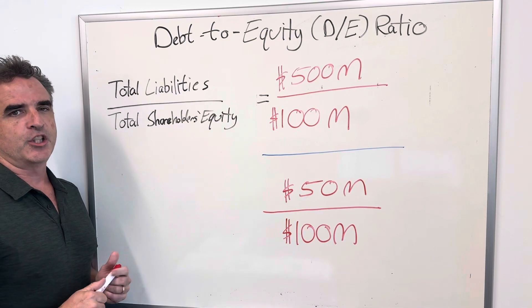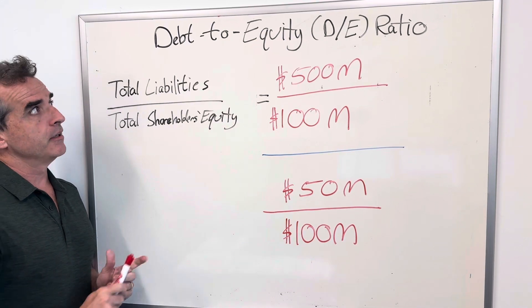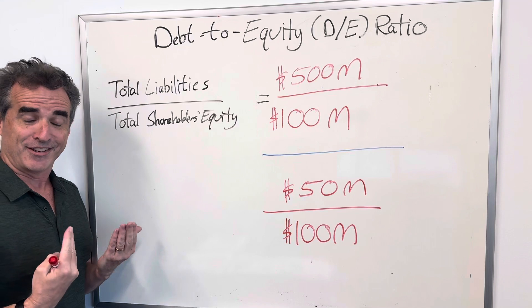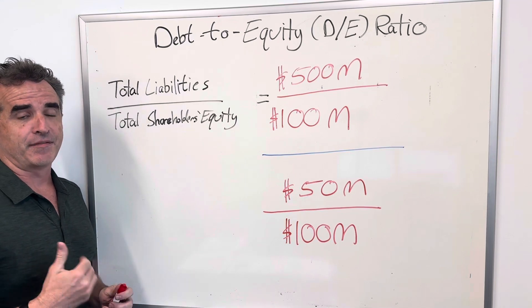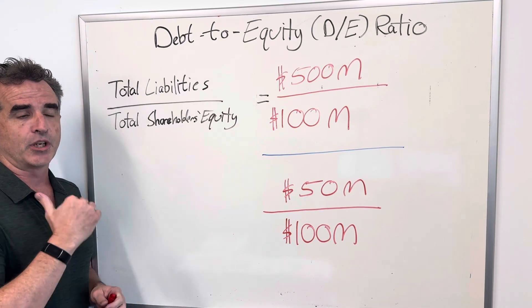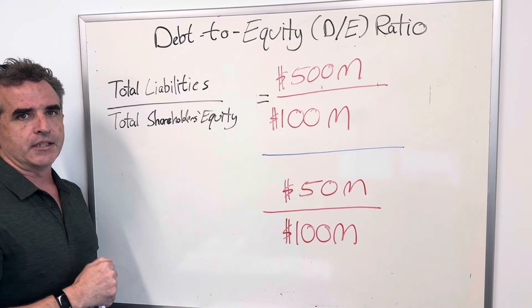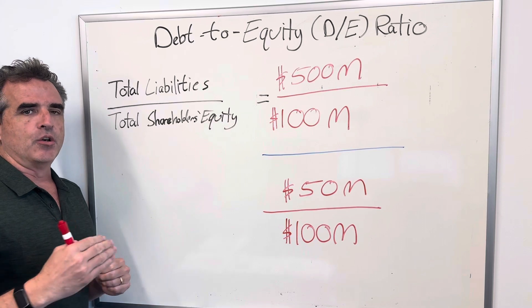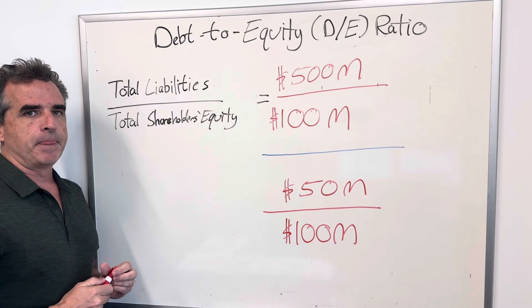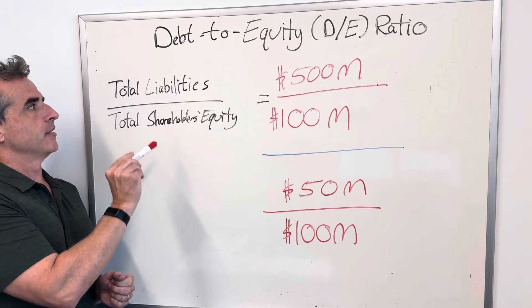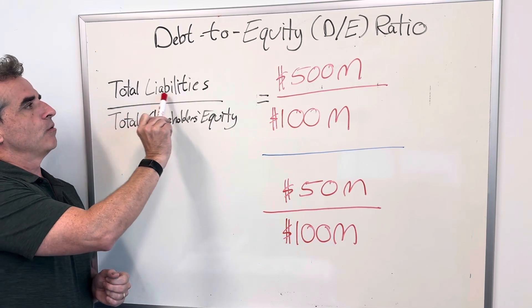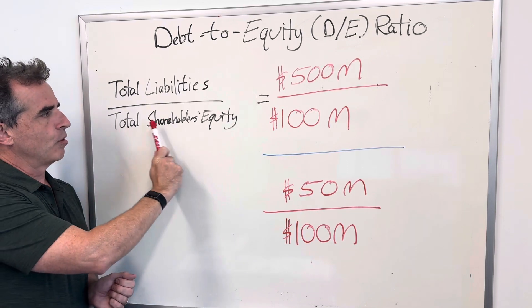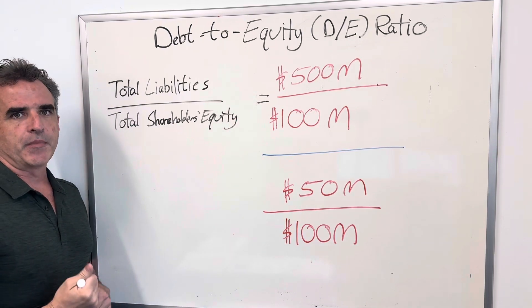I want to talk to you about the debt-to-equity ratio. It's comparing the organization's debt as a ratio to its equity. It looks just like this: you take your total liabilities and divide it by your total shareholders' equity.